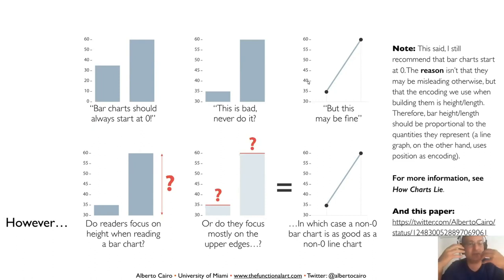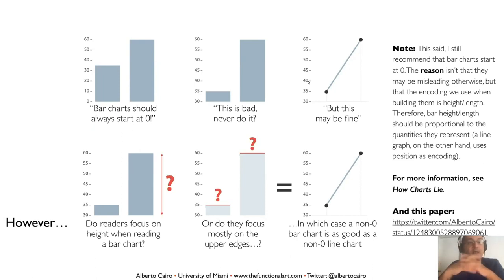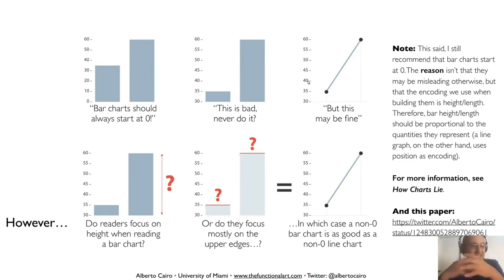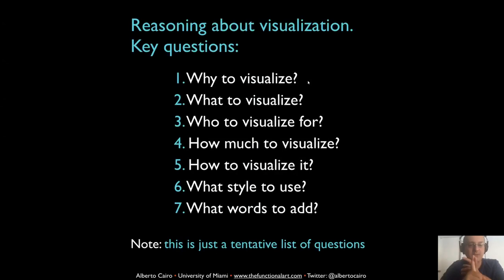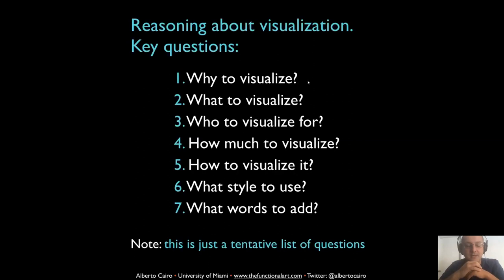This is the type of thinking process that I think we all need to develop — this dialogue with oneself and with other people that may lead us to make better choices when we design visualizations. There are certain kinds of questions that will structure the new book, and the list is tentative: why to visualize, what to visualize, who to visualize for, how much to visualize, how to visualize it, what style to use, and what words to add. Let's go over them one by one.